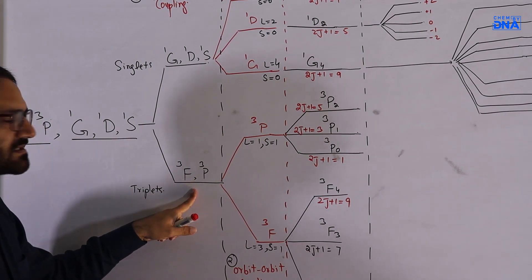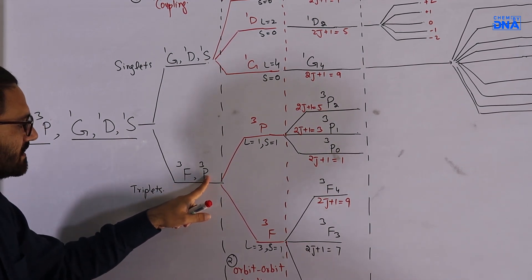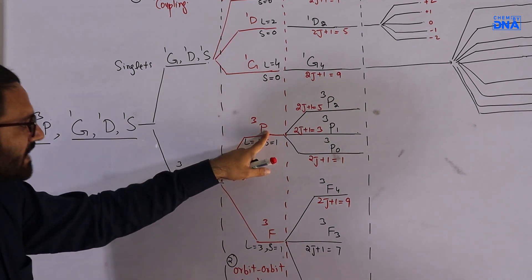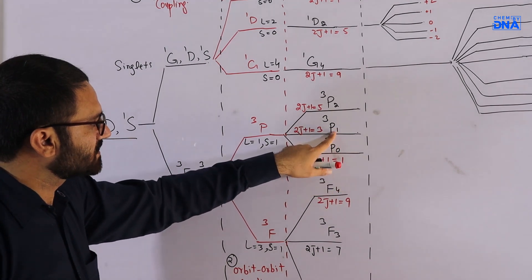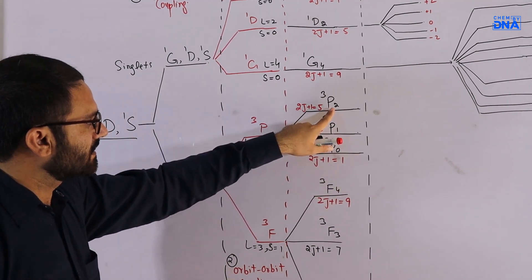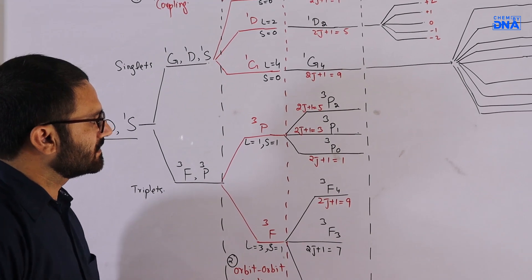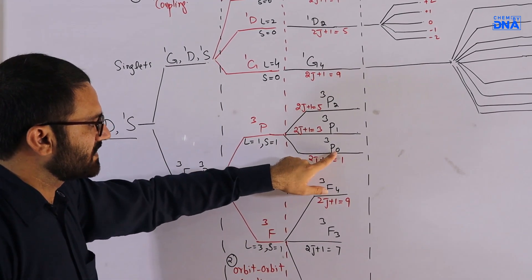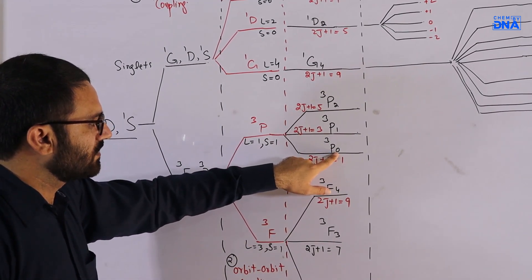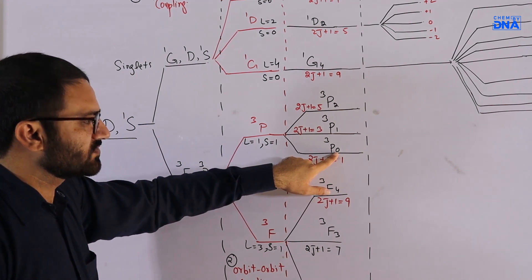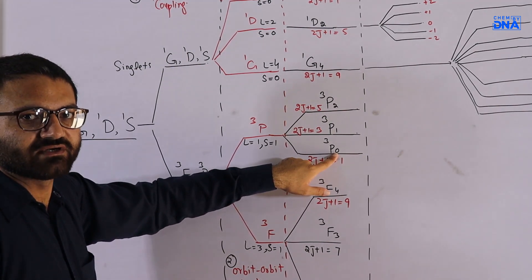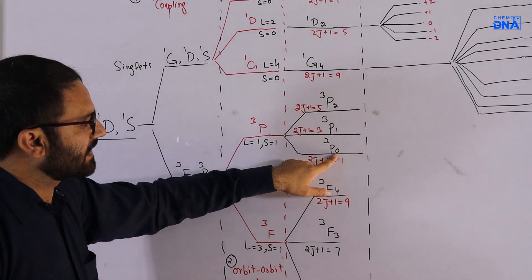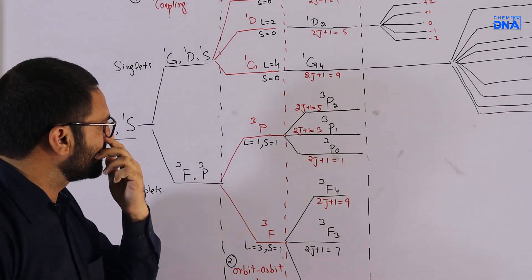In the irregular multiplet system this kind of pattern is not observed. As is apparent, the ³P term has further spectroscopic terms — ³P₀, ³P₁, and ³P₂ — and from this splitting it is clear that lower J values fall lower in energy. Since d2 is less than half filled, a regular multiplet is observed.